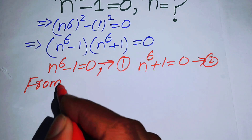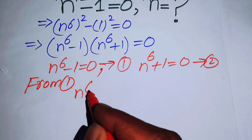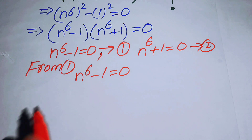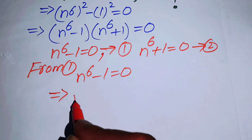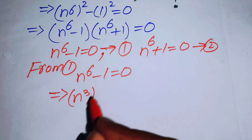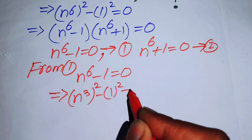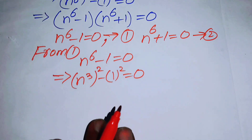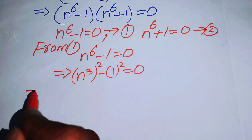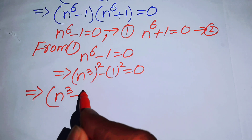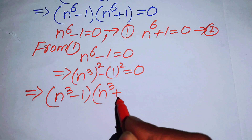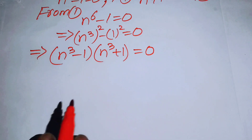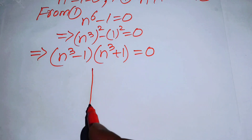For equation number 1, we have n^6 - 1 = 0. We write n^6 as (n^3)^2, giving (n^3)^2 - 1^2 = 0. Using the difference of squares identity again, we write it as (n^3 - 1)(n^3 + 1) = 0.